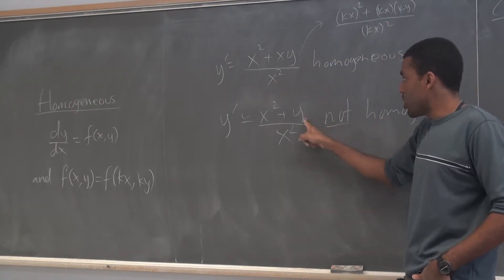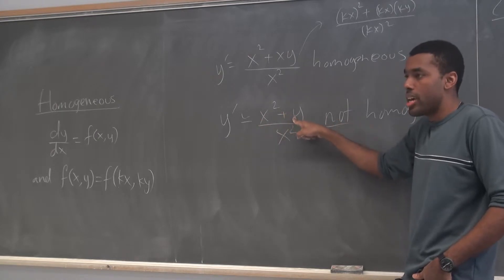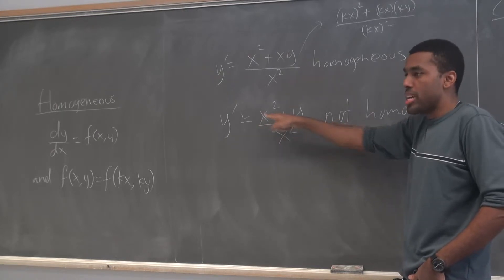In this situation, though, I'd get a k squared here, but only a k here. So there would be a k left over. I can't factor it out and kill all the k's.